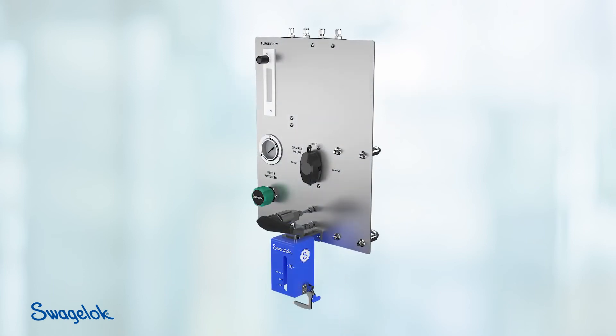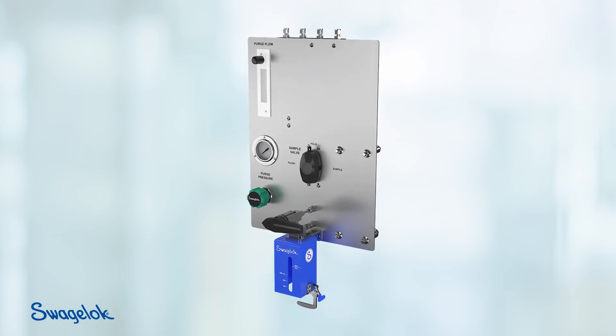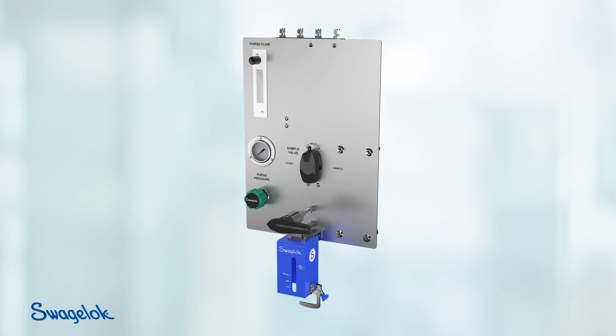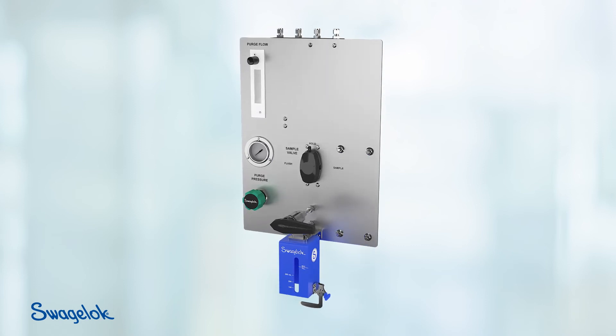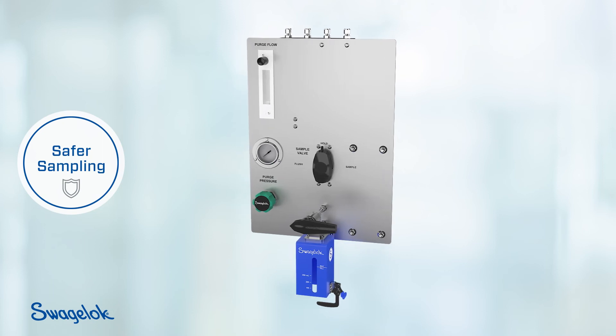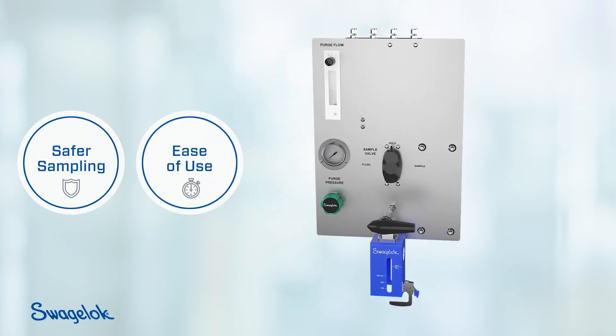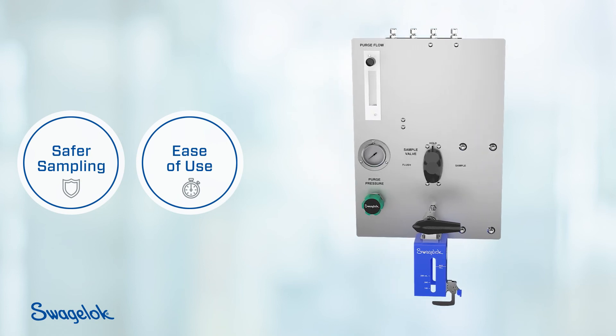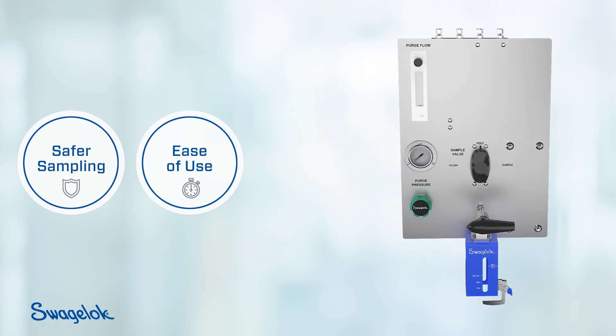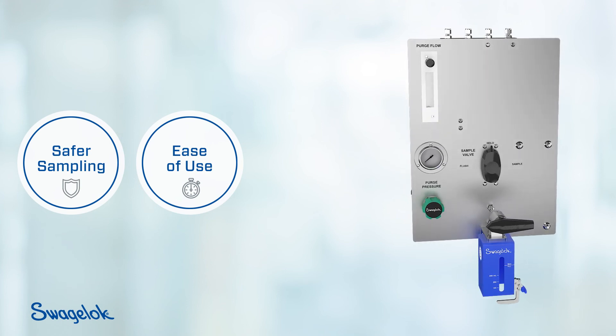In summary, the Swagelok grab sampling valve's design helps you overcome the challenges associated with standard bottle sampling, whether you're incorporating it into a new panel or replacing an existing component. It helps protect operators and the environment by reducing exposure to process fluids. It improves ease of use with one-turn installation. With no elastomers that can harden or degrade over time, the swaged needle assembly creates a leak-tight metal-to-metal seal.